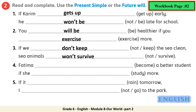Number 4: 'Fatima blank become a better student.' This starts with the main clause because it begins with the subject 'Fatima', not 'if'. So after Fatima we use the simple future: 'will become'. The If-clause should be simple present. 'She' is third person singular, so the verb takes 's' or 'es': 'if she studies'. Full sentence: 'Fatima will become a better student if she studies more.'